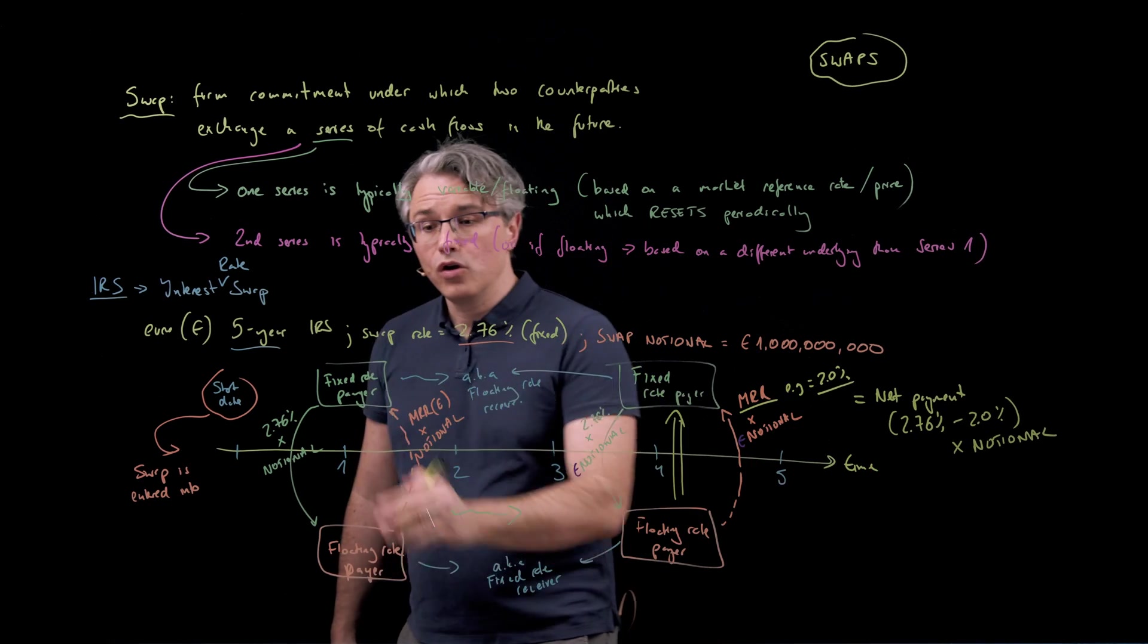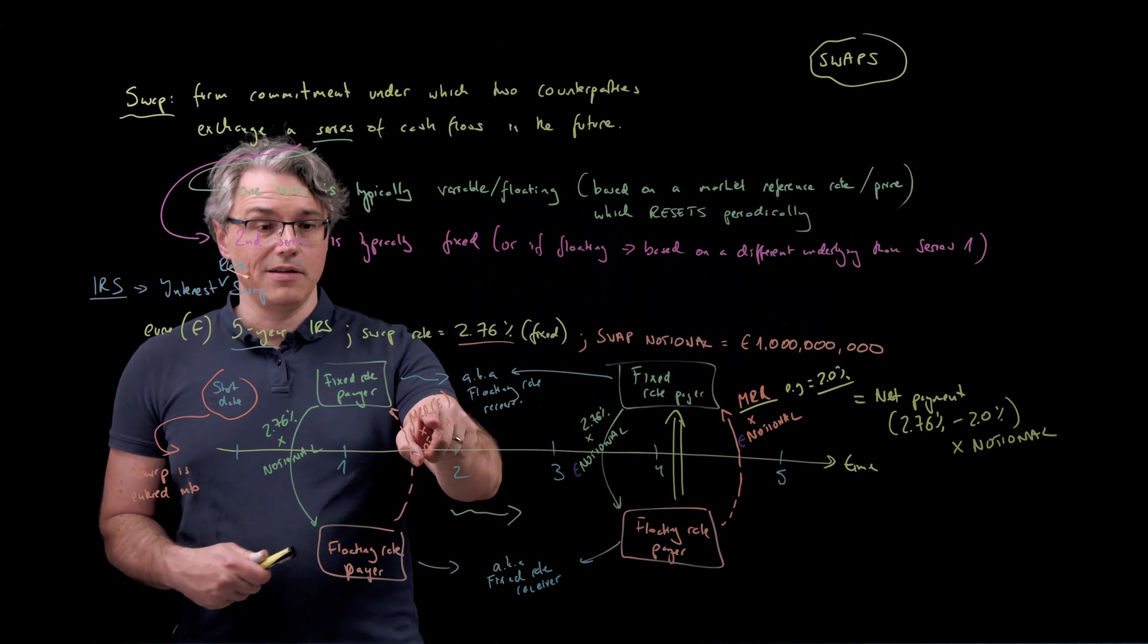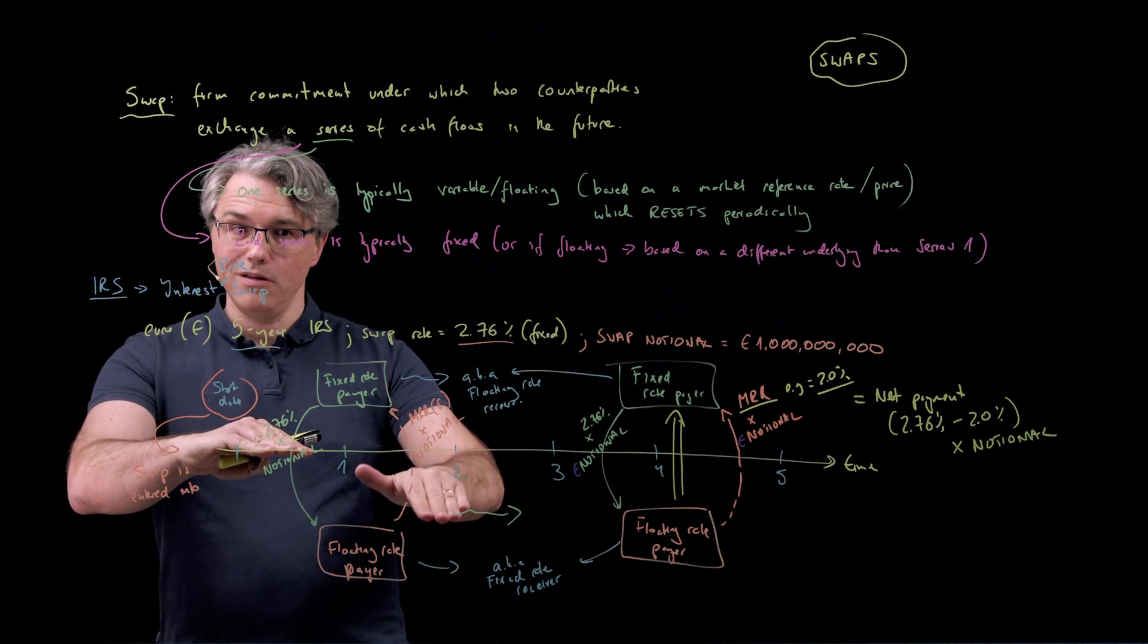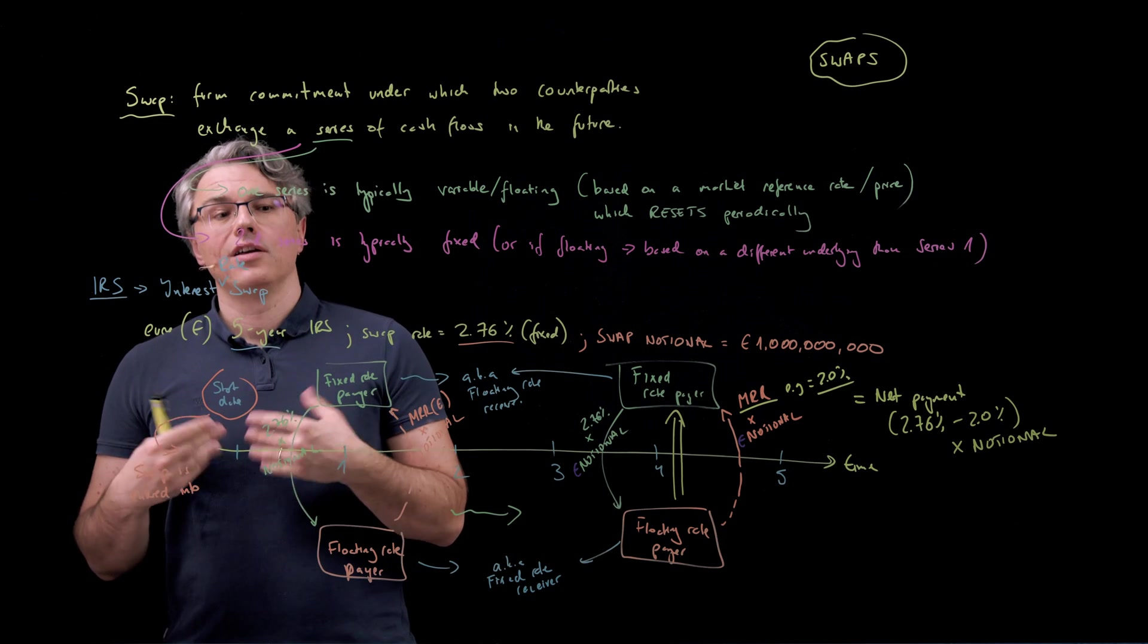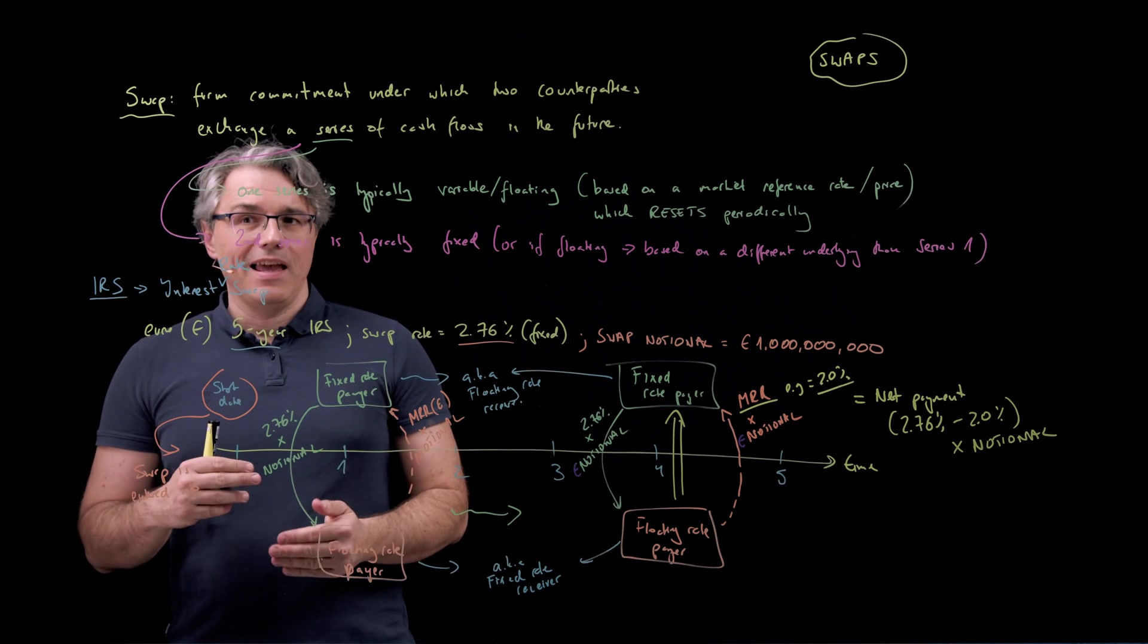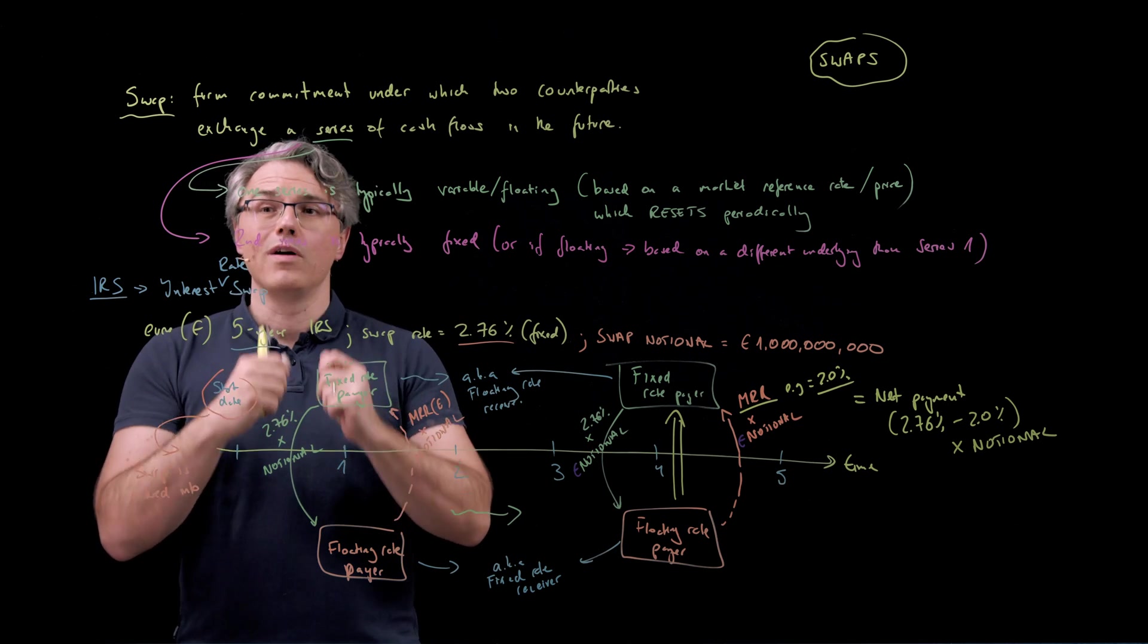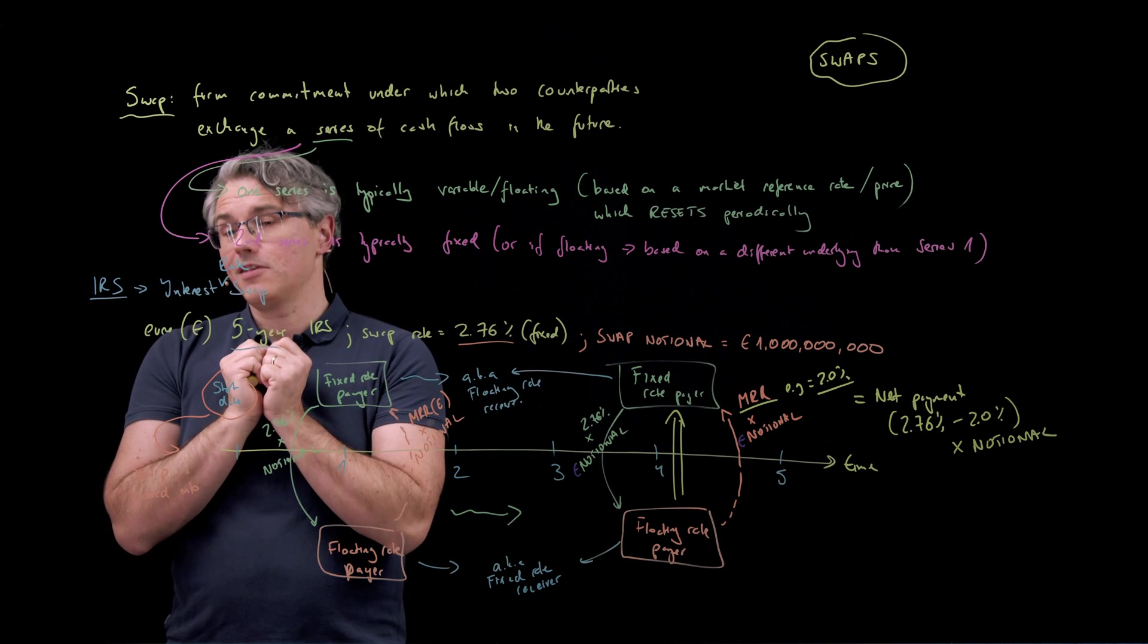So on multiple dates in the future what will happen is we'll be checking whether the market reference rate is higher or lower than the pre-agreed fixed swap rate, and depending on whether it's high or lower, one side will make payments to the other or indeed receive payments from the other.